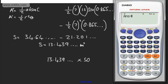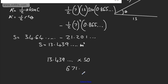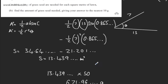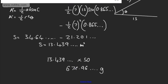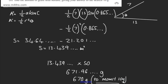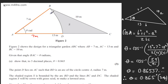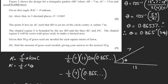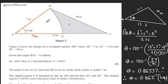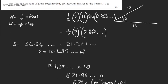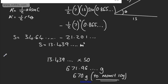Multiplying by 50 gives 671.96... grams. We need to give our answer to the nearest 10 grams, so the answer is 670 grams to the nearest 10. All I've done is found the area of the entire triangle, subtracted away the area of the sector, and multiplied by 50. That's one way to get the seven marks.